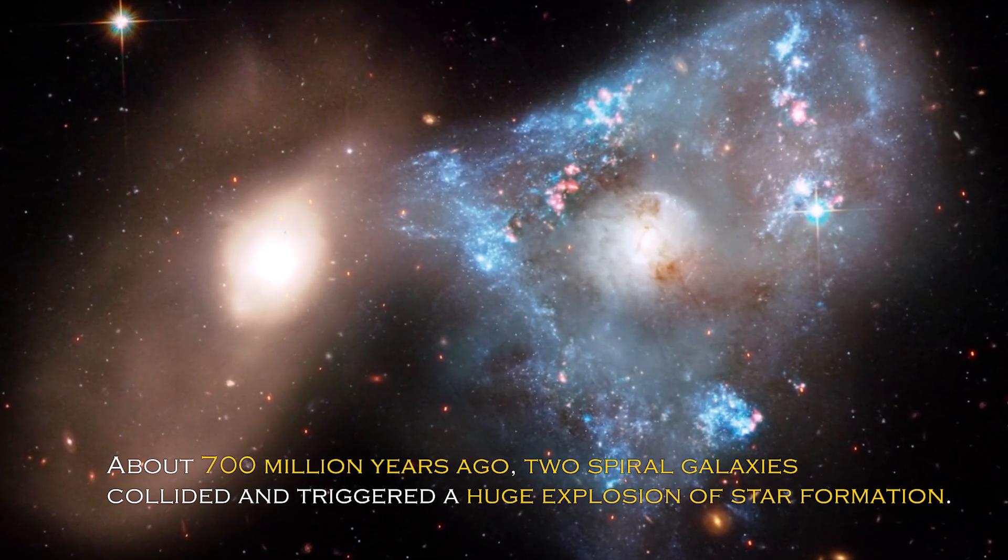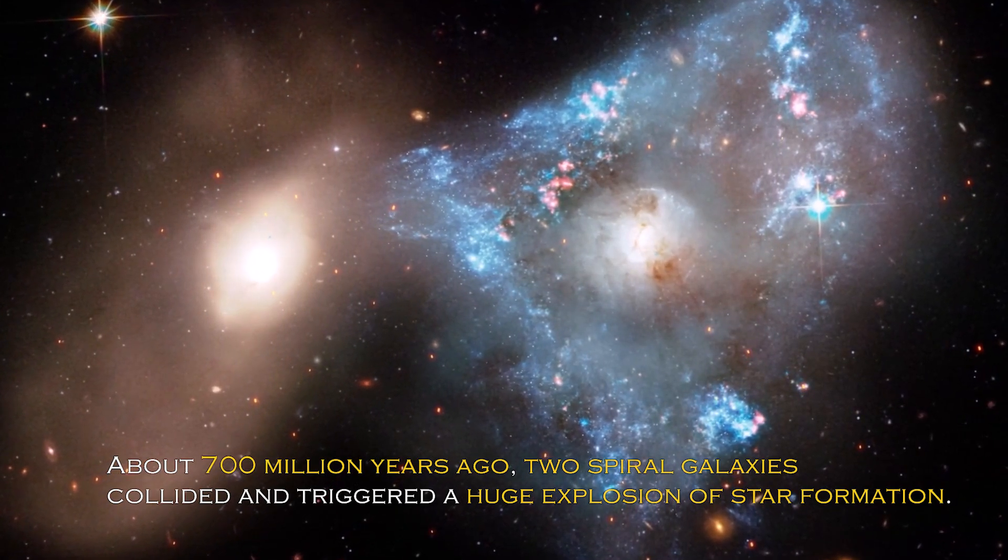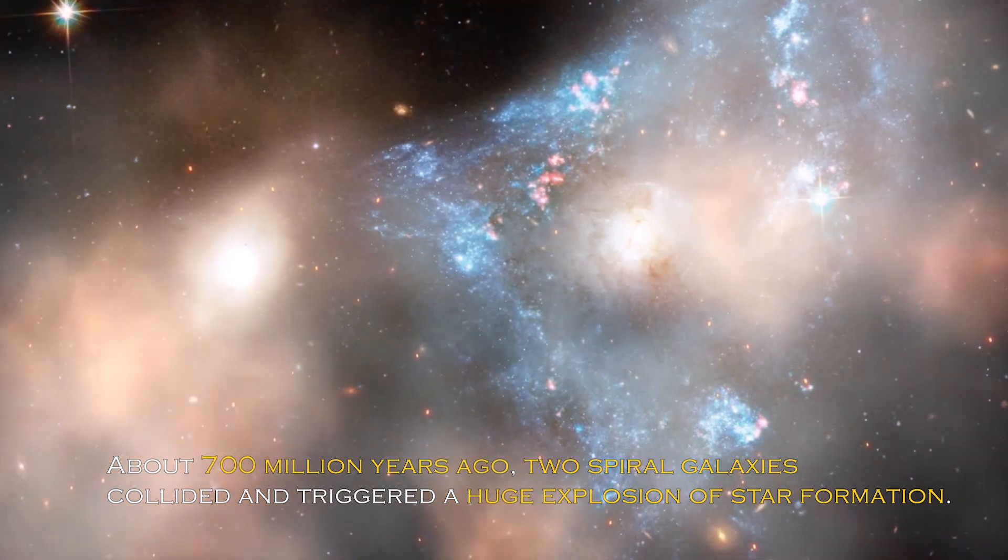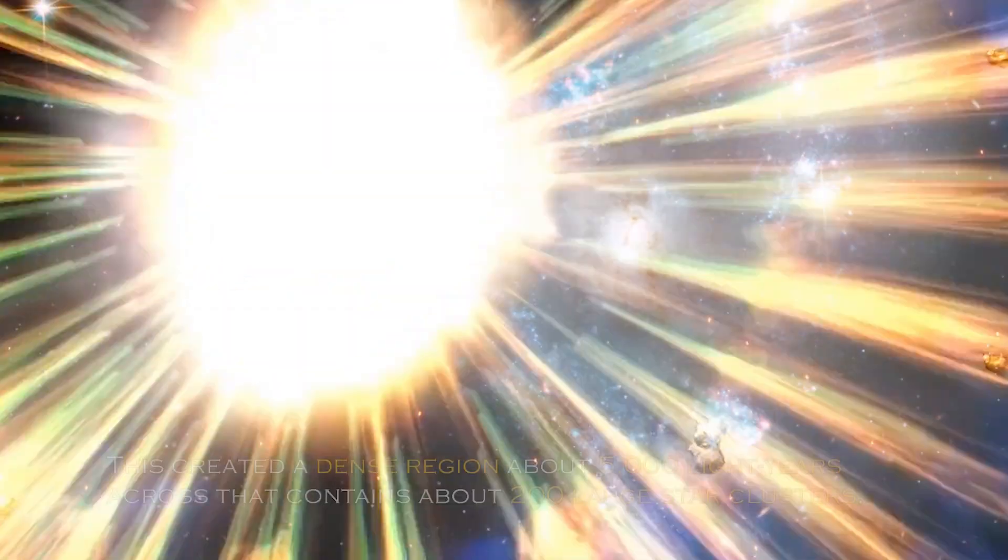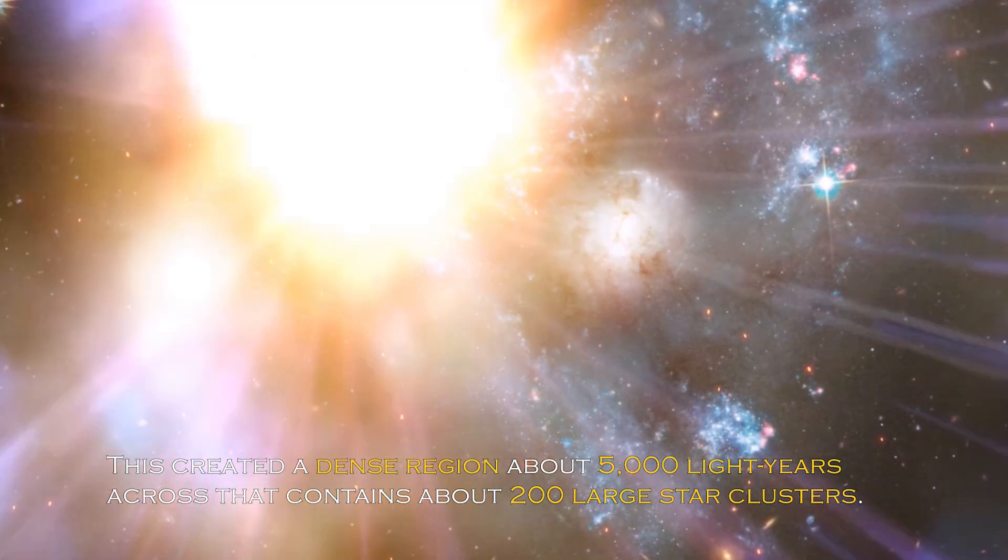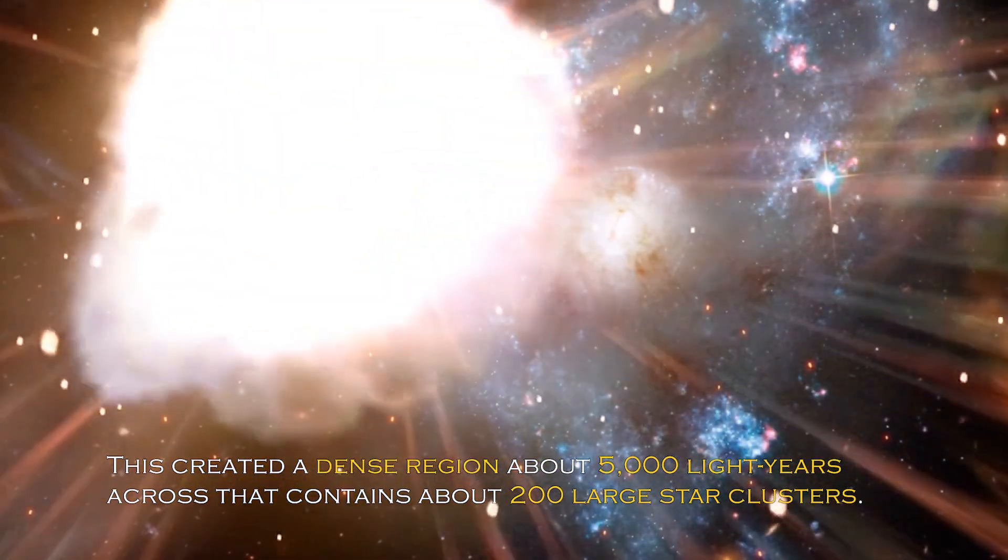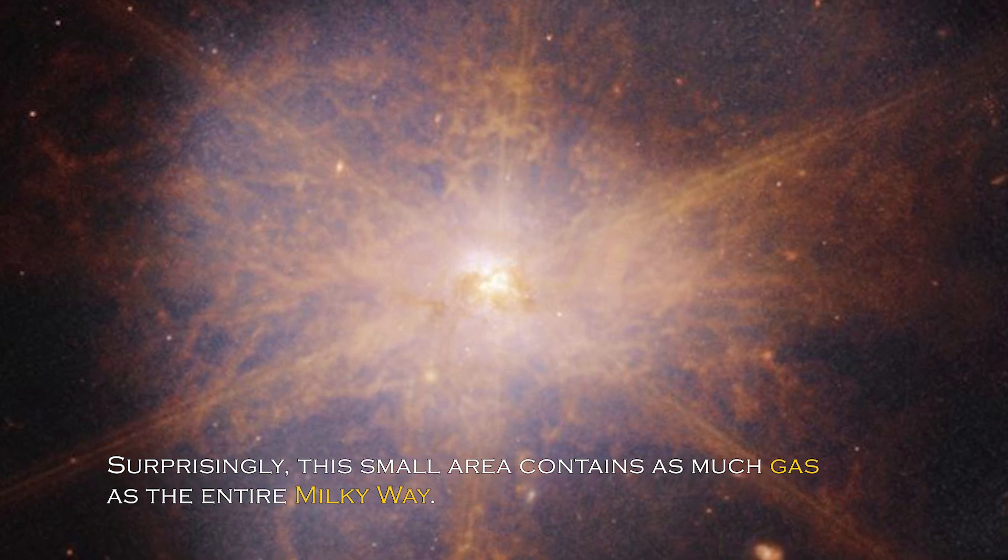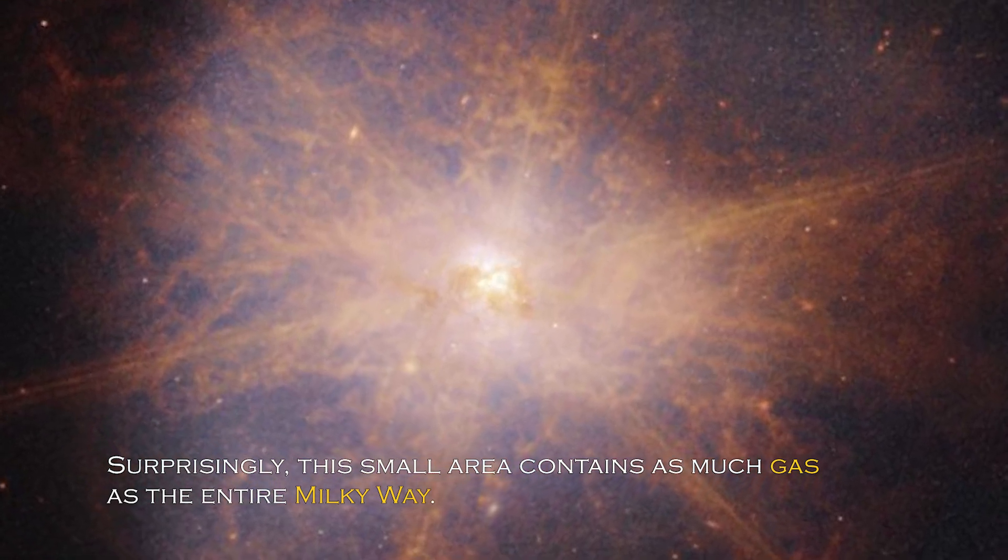About 700 million years ago, two spiral galaxies collided and triggered a huge explosion of star formation. This created a dense region about 5,000 light-years across that contains about 200 large star clusters. Surprisingly, this small area contains as much gas as the entire Milky Way.